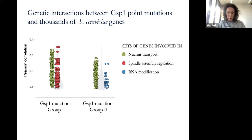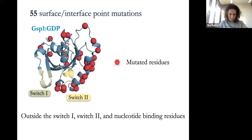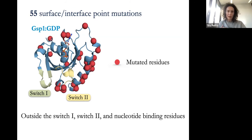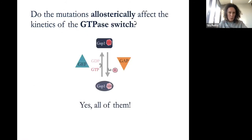The main result was that we found two groups of mutations. One group had phenotypes similar to deletions of genes involved in nuclear transport and cell cycle regulation — specifically spindle assembly regulation. The second set of mutations was similar to deletions of genes involved in nuclear transport and RNA modification, but not spindle assembly regulation. Importantly, these mutations were interface mutations, nowhere close to the active site or the canonical switch-1 and switch-2 regions of the GTPase.